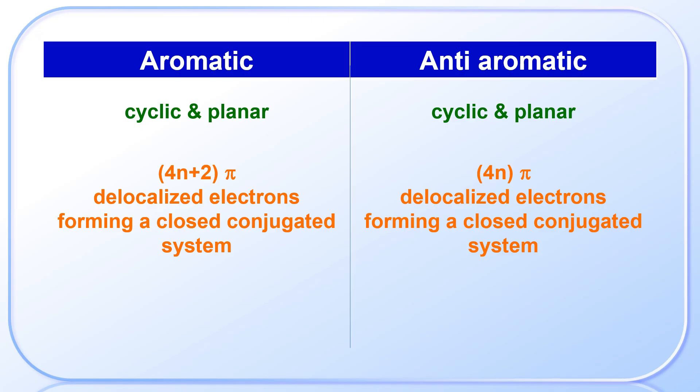But in aromatic compounds, there are 4N+2 pi-electrons. So because of this, aromatic compounds are highly stable, whereas anti-aromatic compounds are very unstable.